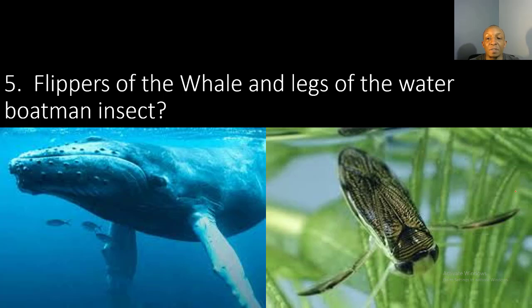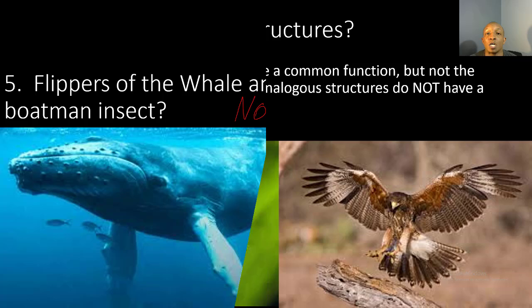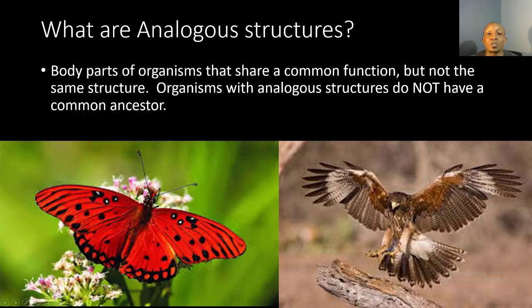Number five: flippers of the whale and legs of the water boatman insect. These are actually not homologous structures. You can tell because they do not have a common ancestor — a whale and an insect would not share a common ancestor, so their structures are not the same, even though their functions may be similar. Therefore, no, they are not homologous structures.